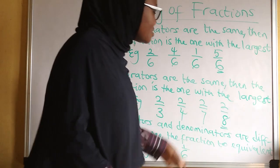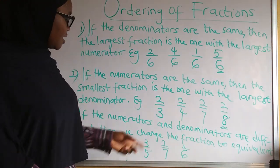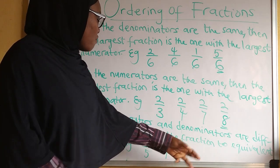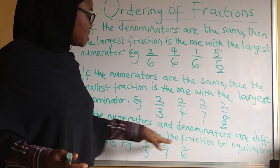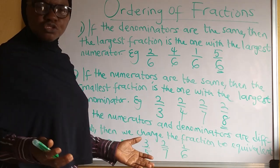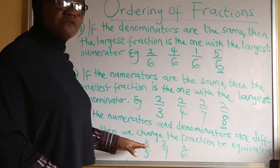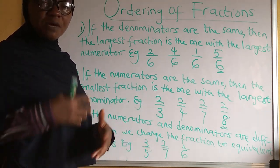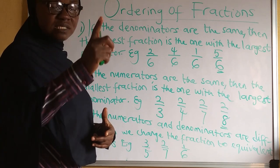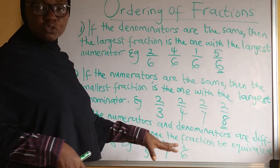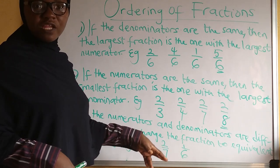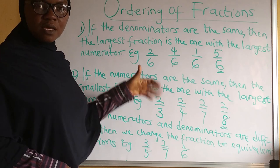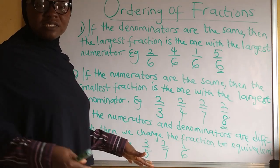The third rule: if the numerators and denominators are all different — for instance 3/5, 2/7, 1/6, 3/4 — the denominators are not the same and neither are the numerators. In this case you have to convert them to equivalent fractions first. After converting to equivalent fractions you will be able to decide which is the largest or the smallest.